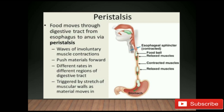This type of movement is known as peristalsis. The food moves through the digestive tract from the esophagus to the anus via peristalsis. In the diagram you can see the contracted muscles and the relaxed muscles, and the food moving through the esophagus. The contraction of the involuntary muscles of the walls of the esophagus moves food downward into the stomach — this is peristalsis.